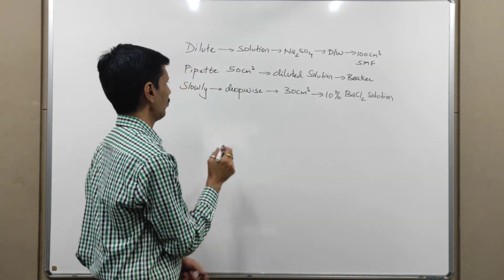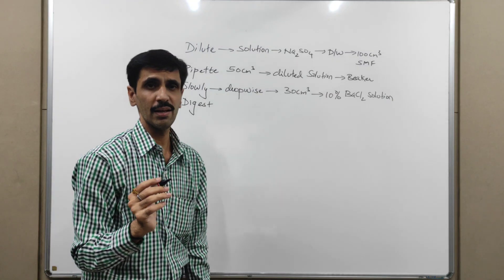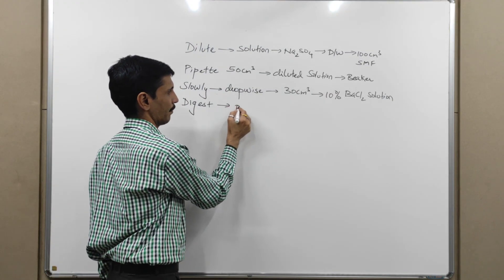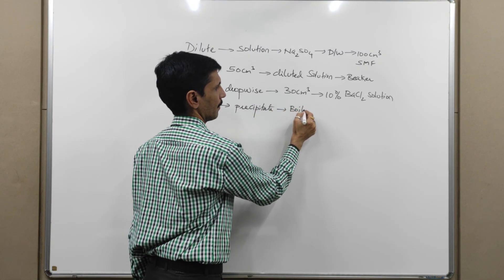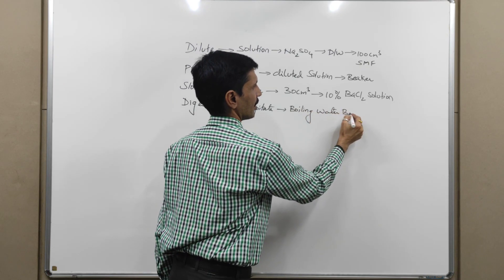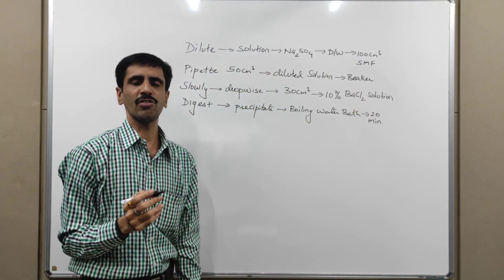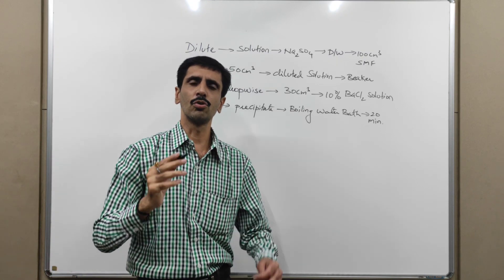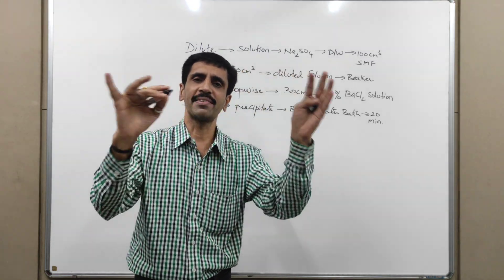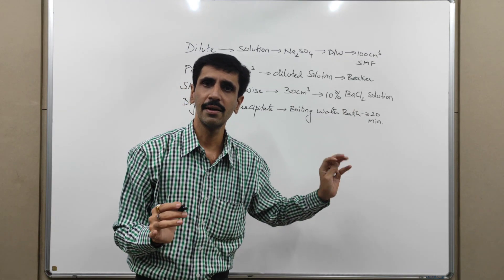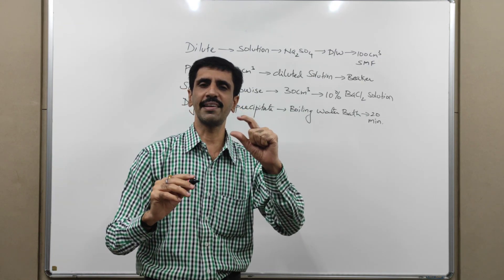BaSO4 is not the only product — it is formed along with NaCl as well. So, what we are going to do is digest the precipitate on a boiling water bath for approximately 20 minutes. The main purpose of this digestion is to effectively separate the precipitate from the solution. After 20 minutes, the barium sulfate particles settle down and the clear solution of NaCl will be at the top.